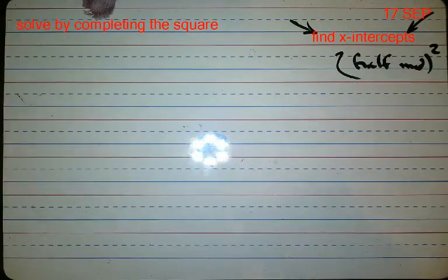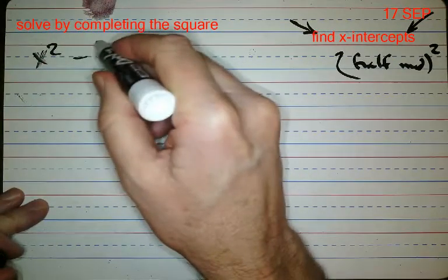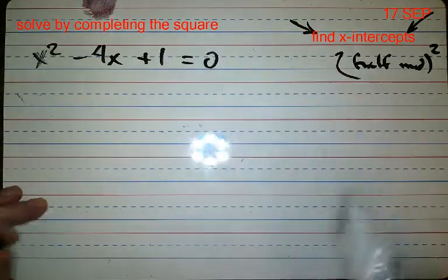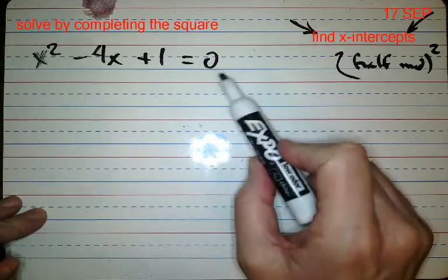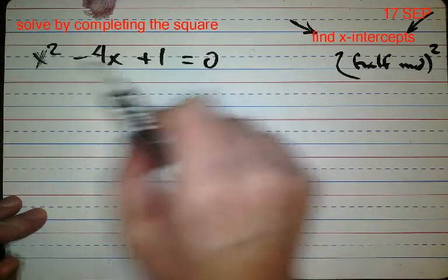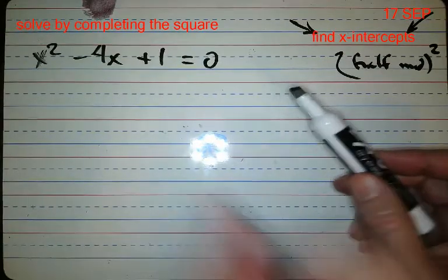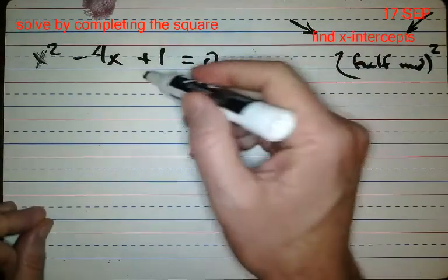Okay, here we go. What if I had x squared minus four x plus one equals zero? Whoa, okay. Well, the first thing you have to do is the x's have to be by themselves on the left-hand side of the equal sign, and the one has to be on the other side. So I'm going to subtract the one.